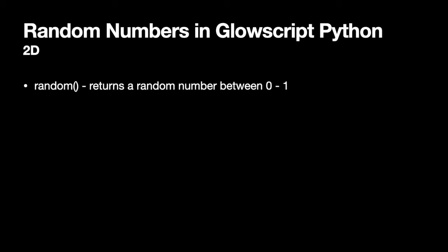You can make random numbers in Python in a lot of ways. With GlowScript vPython, really there's just one — the random function, which returns a random number between zero and one. If I want values between negative one and one, I take random, multiply by two, and subtract one. The maximum would be two minus one, which is one; the minimum would be zero minus one, which is negative one.